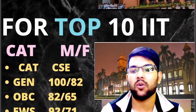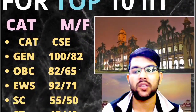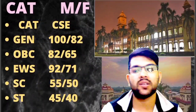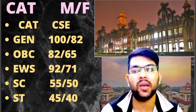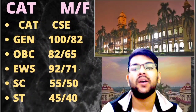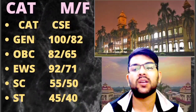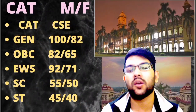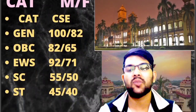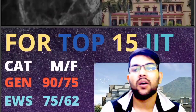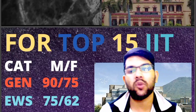Continuing with top 10 IIT cutoffs: OBC is 82 and 65 marks, EWS is 92 and 71 marks, SC is 55 and 50 marks — male and female respectively. After the slash it is for female, and due to female reservation you need fewer marks compared to male students. For ST it is 45 and 40 marks.